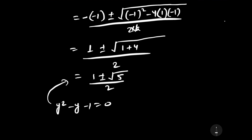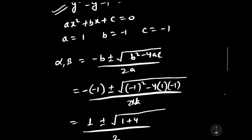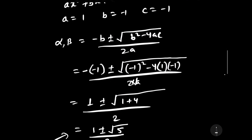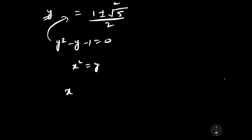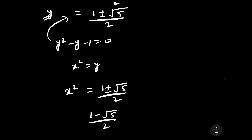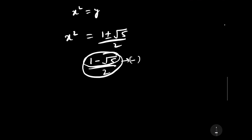In our original equation we assumed x squared equals y. So x squared equals (1 plus or minus square root 5) divided by 2. Since x squared must be positive, we ignore the value (1 minus square root 5) divided by 2, because the square root of 5 is larger than 1, making that value negative.